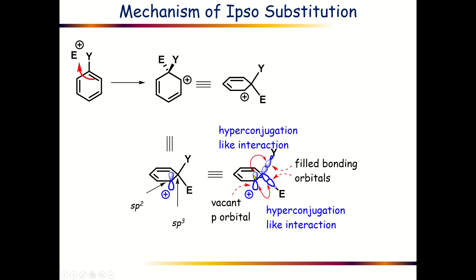This particular region of this bonding orbital and this p orbital lobe are of the same phase, and thereby they will undergo a stabilizing interaction. In this case also, this region of this carbon-E bonding orbital and this lobe of the p orbital are of the same phase and thereby undergo another stabilizing interaction, and thereby the overall energy of this carbocationic species will be much lower. Additionally, there is resonance stabilization also present in this case.